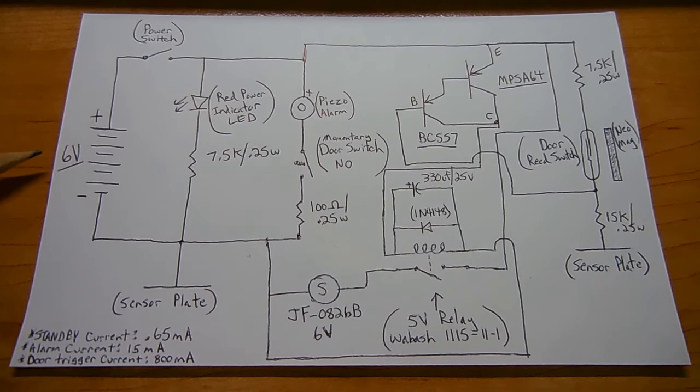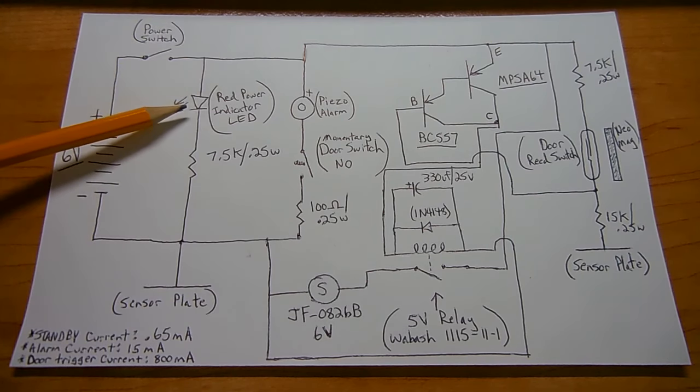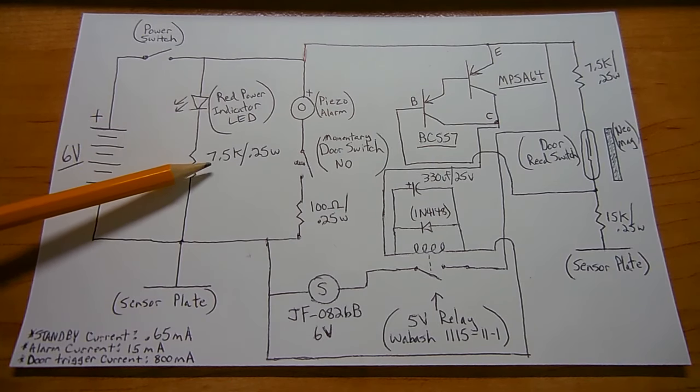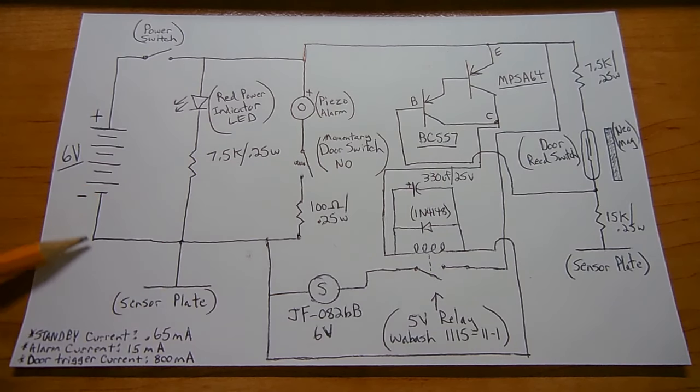Power supply is 6 volts, 4 C batteries. Positive goes over to the power switch. When the switch is closed, it turns on the power indicating LED, which is red, water clear red. In order to limit the current through this LED to help preserve battery life, I use a 7.5K resistor, quarter of a watt, connects to the negative rail.